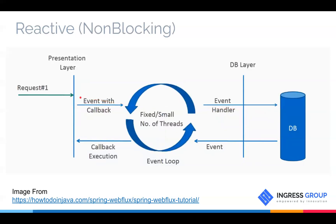In reactive or non-blocking architecture, the requests are sent to an event loop, from where they are passed to your subsystem. Until the subsystem renders a response, the thread that initially created this request is not blocked — it is free when the request is sent to your subsystem and is able to respond to another client's request. This makes a huge difference especially when you have dependency system failures or latencies.